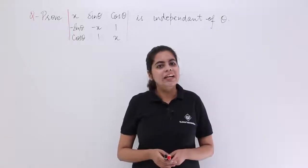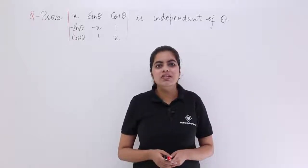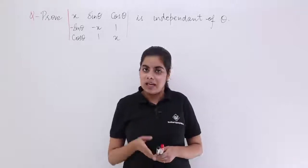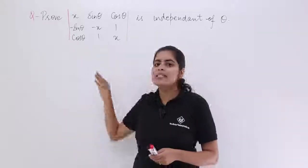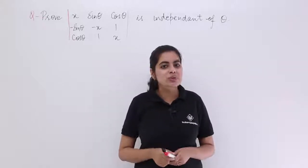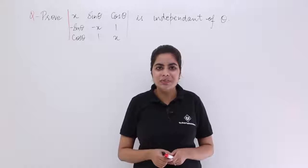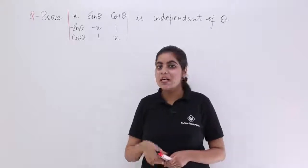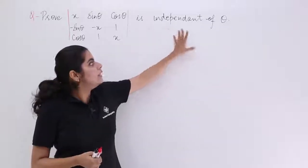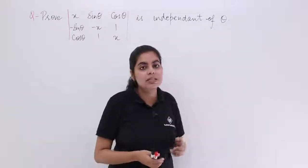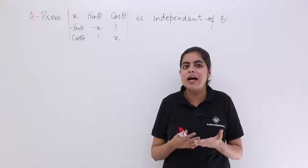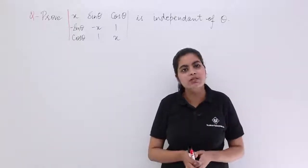In this video let's see another numerical problem based on the topic of determinants. The problem is a proof question, somewhat different from the previous questions. We need to prove that the value of the determinant is independent of theta — that means the value we obtain will not have theta in it. That is what we need to prove.